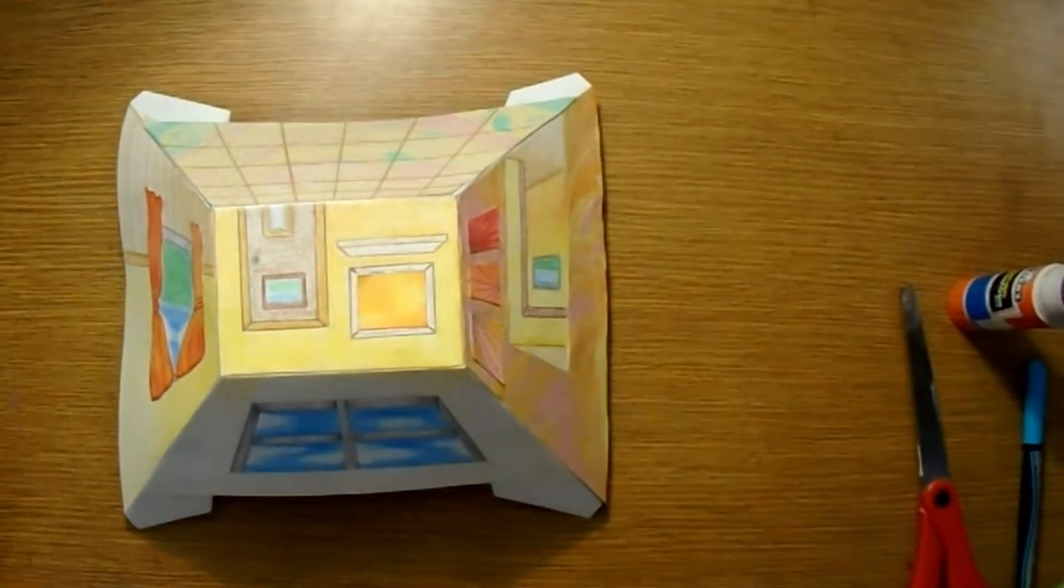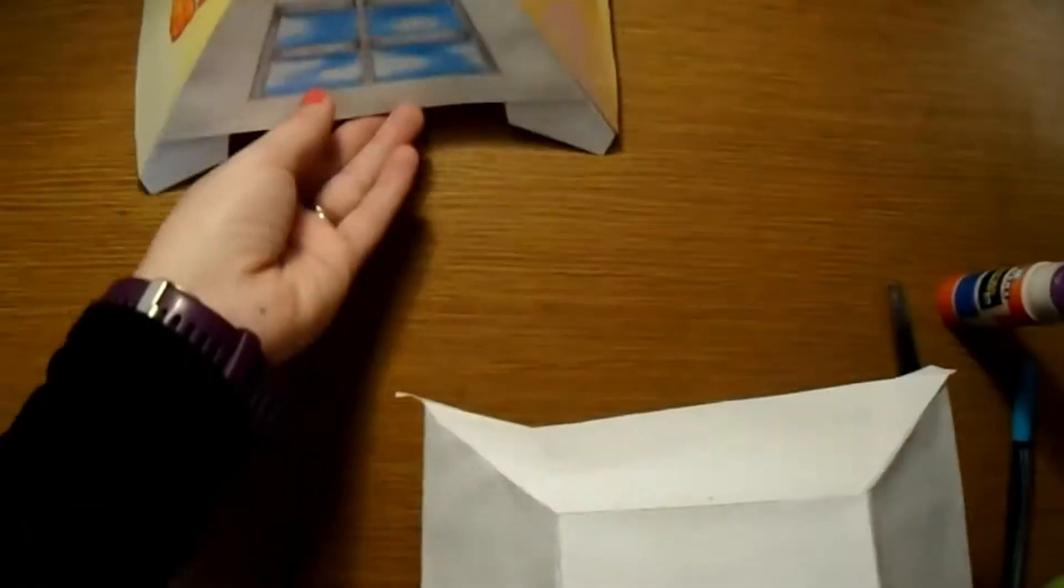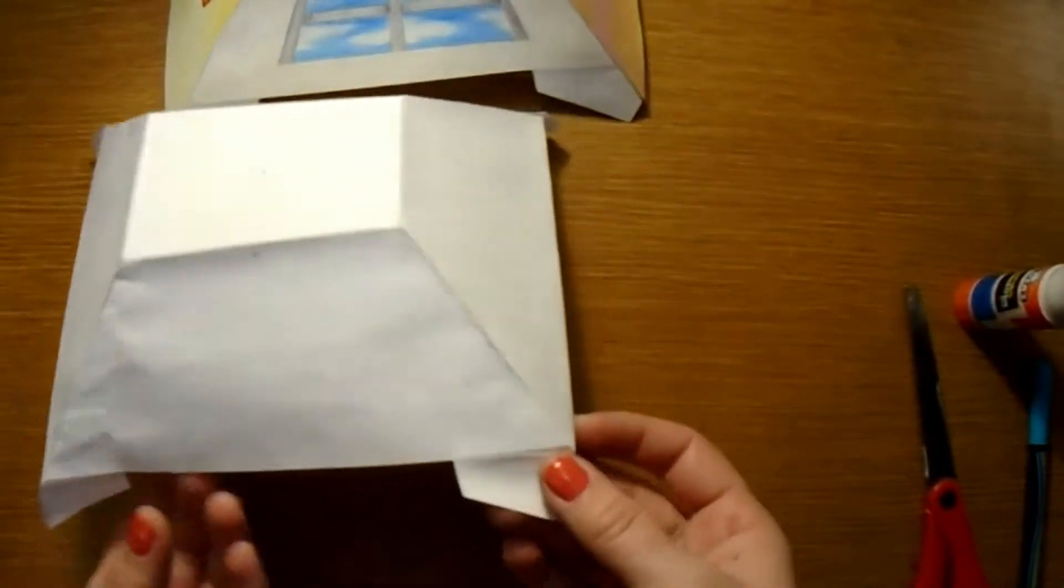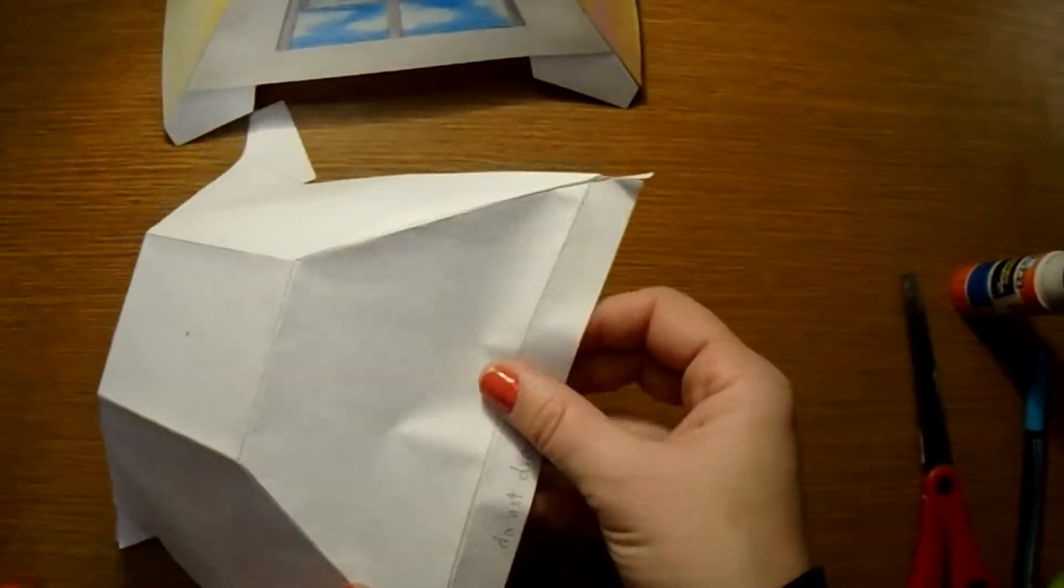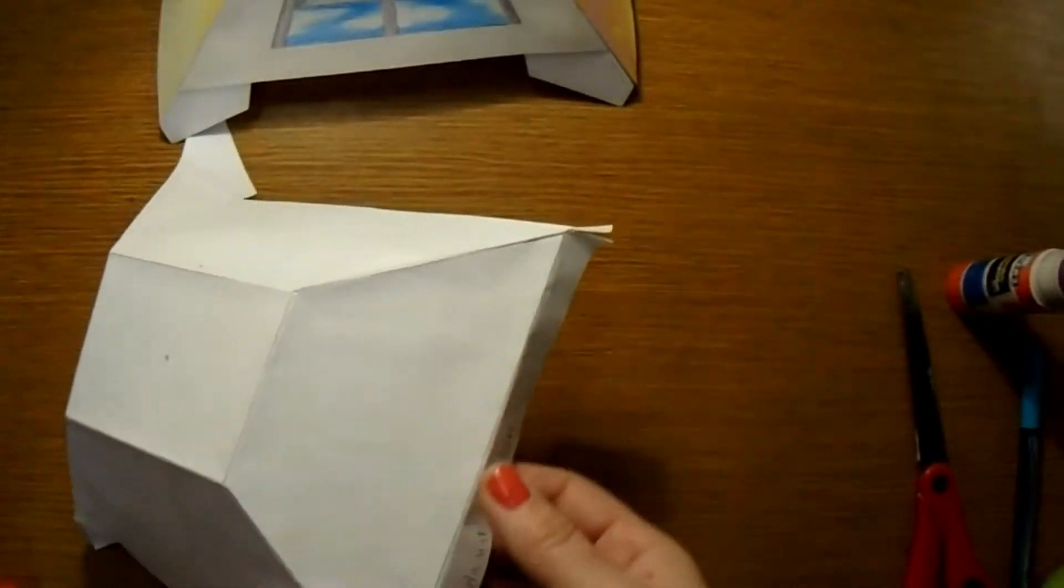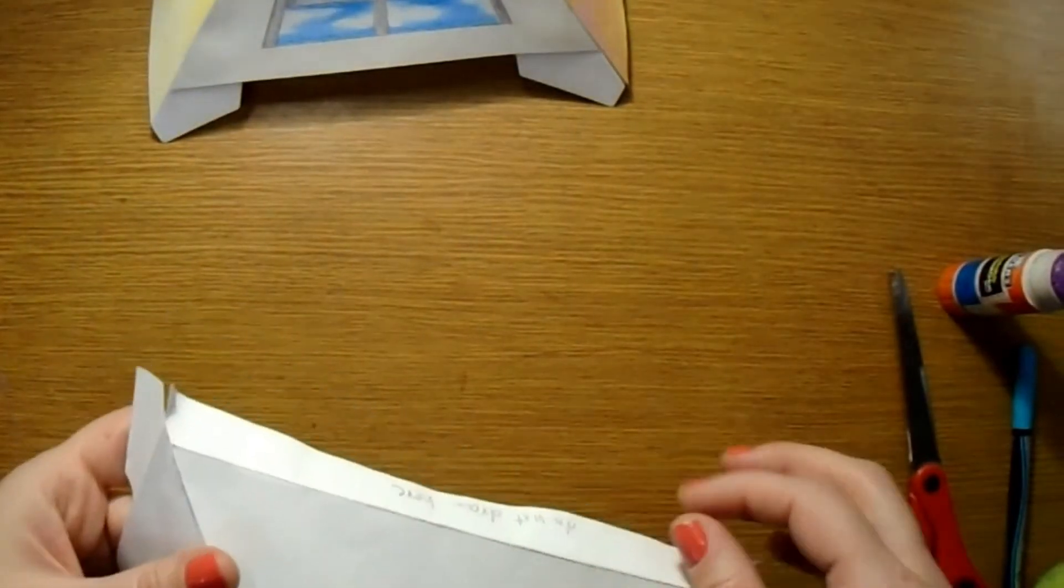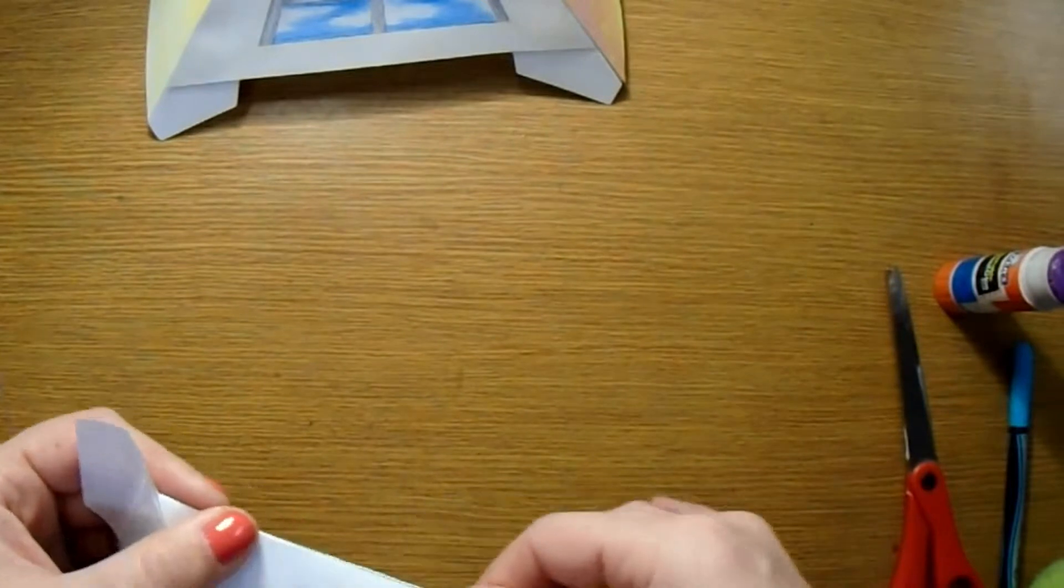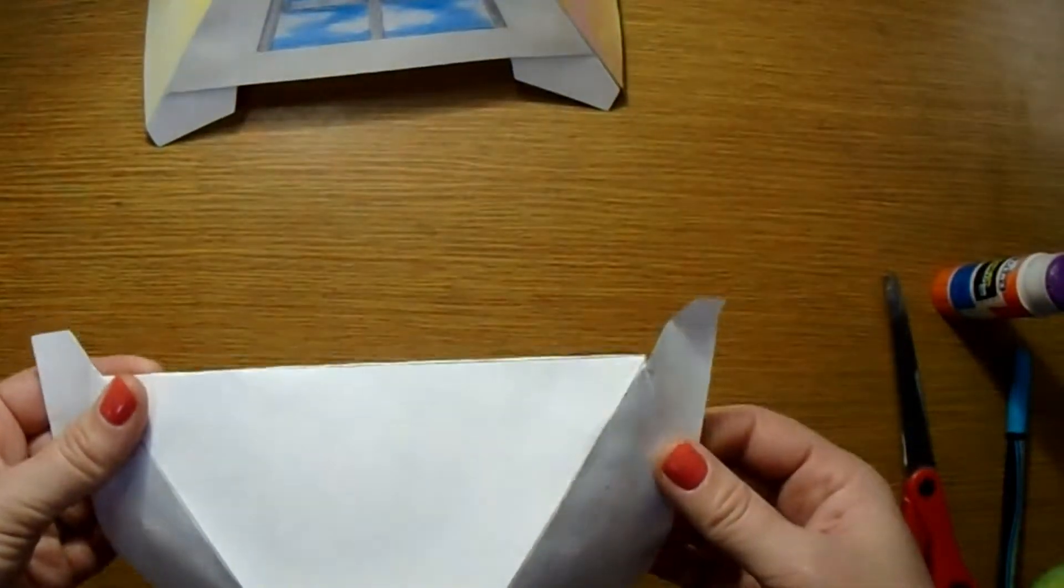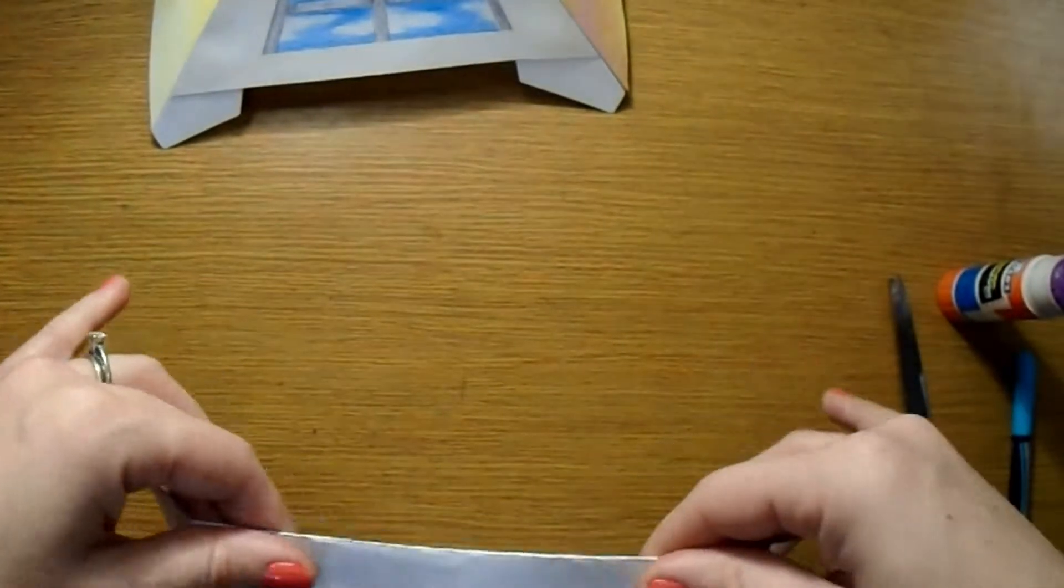But I'm going to show you just with a practice one, what we're going to do next. So there was a side that said do not draw here. That edge, we're going to be folding back behind. And then the same on the opposite side where it said do not draw here, fold that back behind.